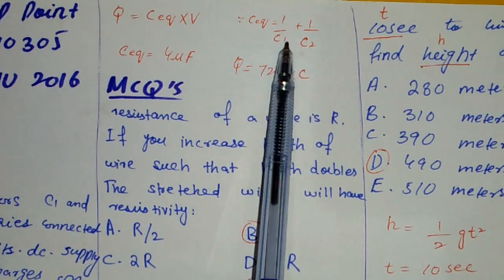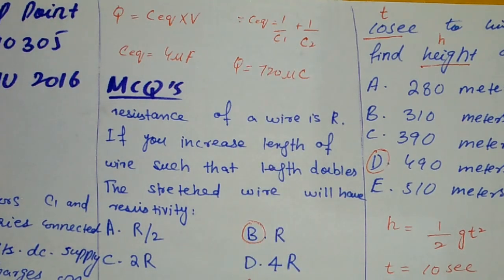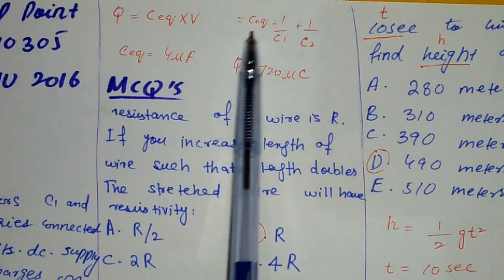So we will add them simply. What will we do in series? We will sum up 1/C equivalent equals 1/C1 plus 1/C2.